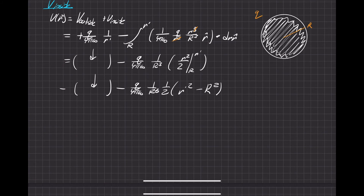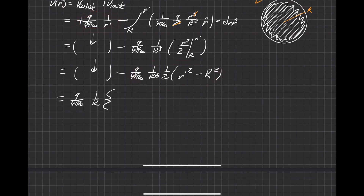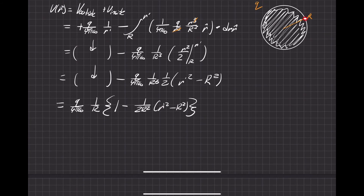Writing it all out explicitly and simplifying, common to both terms is Q over 4πε₀, and there's a 1 over R common to everything. We end up with a curly bracket containing 1 minus a term with the difference between r prime squared and R squared. This makes sense because when r prime equals R — at the cusp — this whole inside term drops to zero and all that's left is V outside.